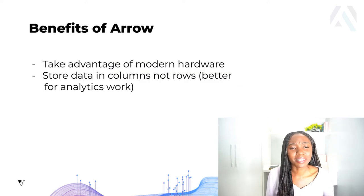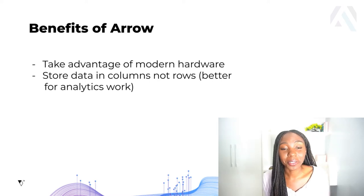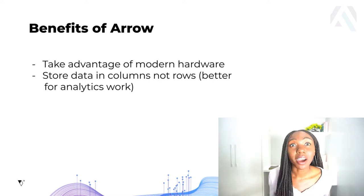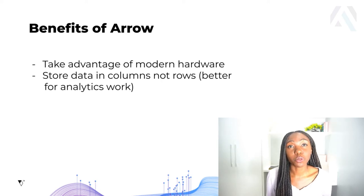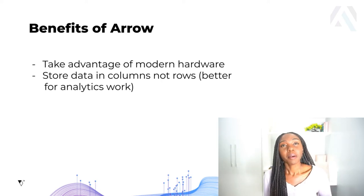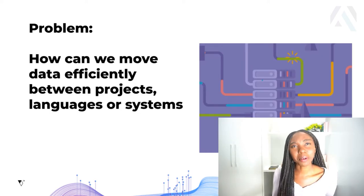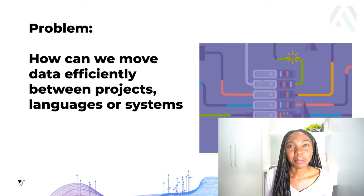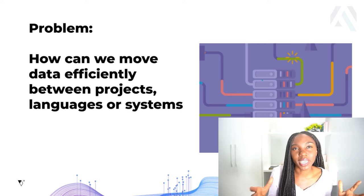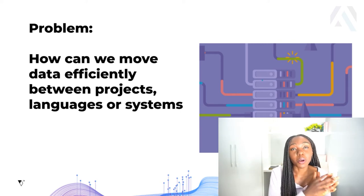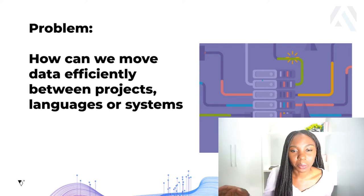So far, we've seen that Arrow's columnar format makes it possible for us to take advantage of modern-day hardware, and it allows us to do more efficient analytics work by storing data in columns instead of rows. The second problem that Arrow addresses is how we can make it more effective to move data efficiently from one project to another, or from one programming language or system to another.